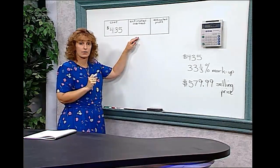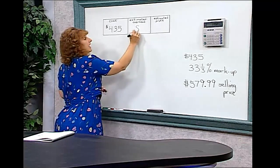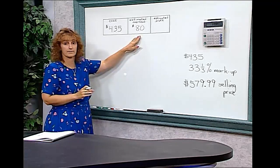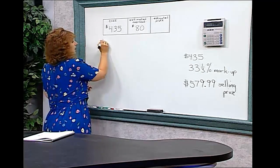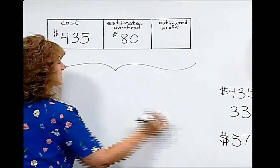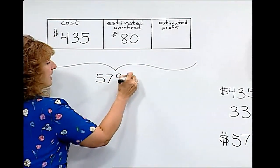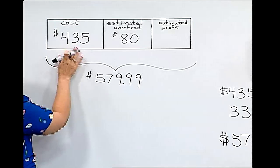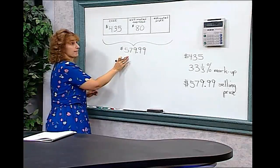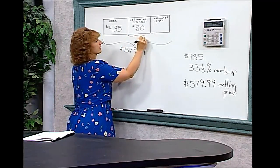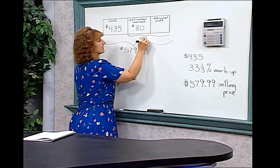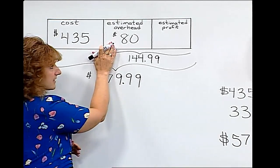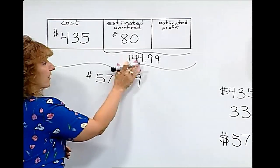Let's say that Adams Store knows they have eighty dollars in overhead because they have to pay electric bills and expenses and things like that. We know that this entire chart shows us the selling price of five hundred seventy-nine dollars and ninety-nine cents. If I were to subtract these two numbers, I would get our markup, and our markup was one hundred forty-four dollars and ninety-nine cents.